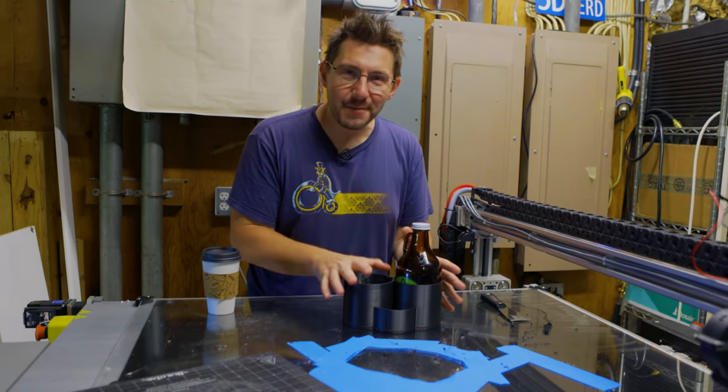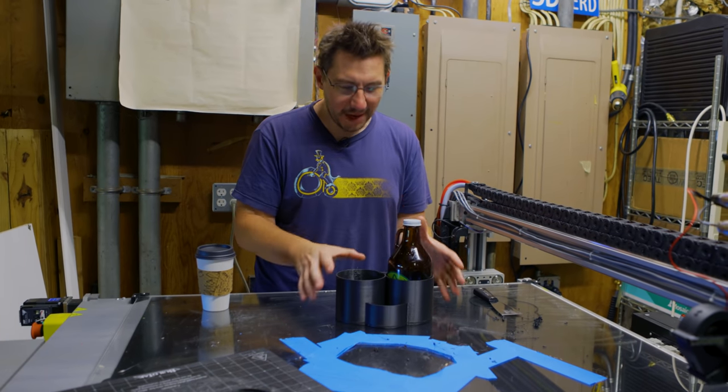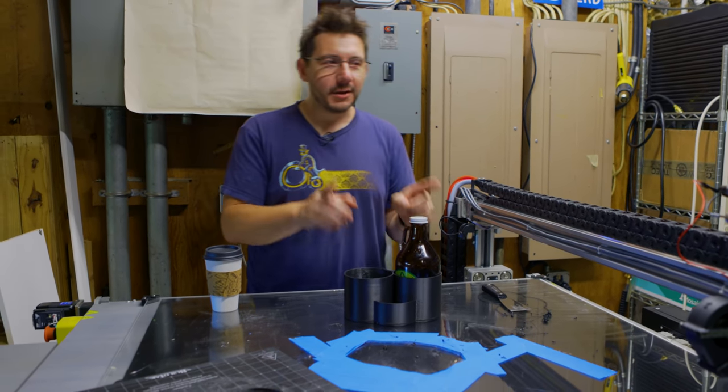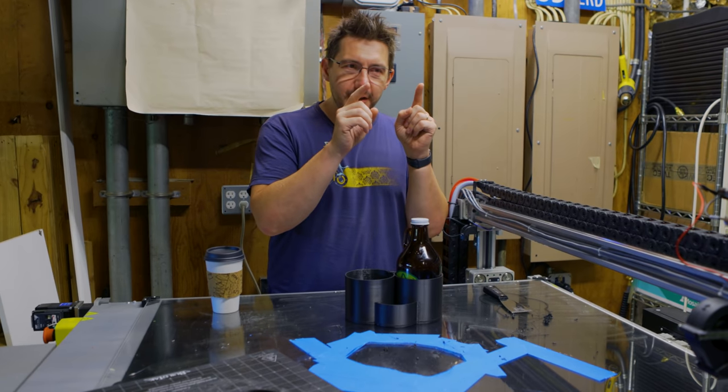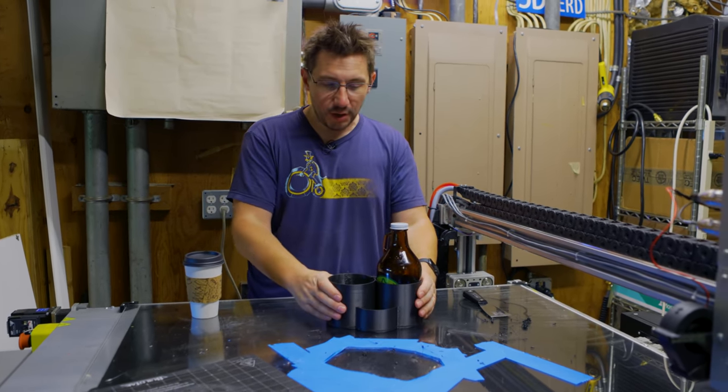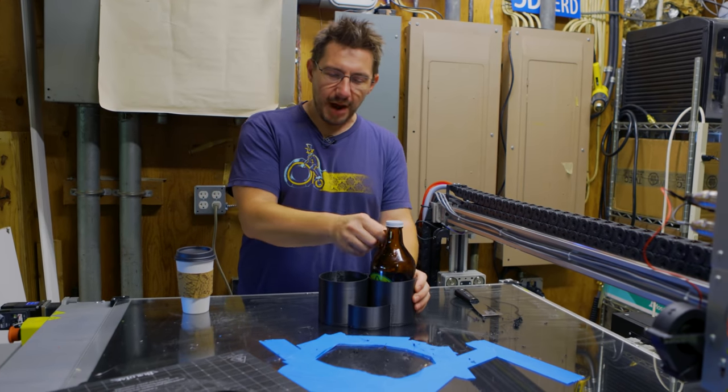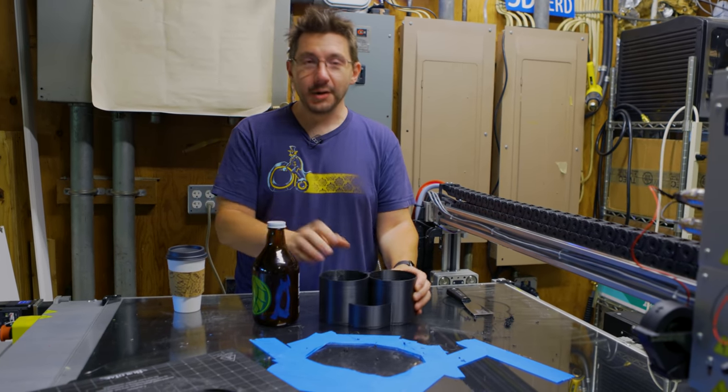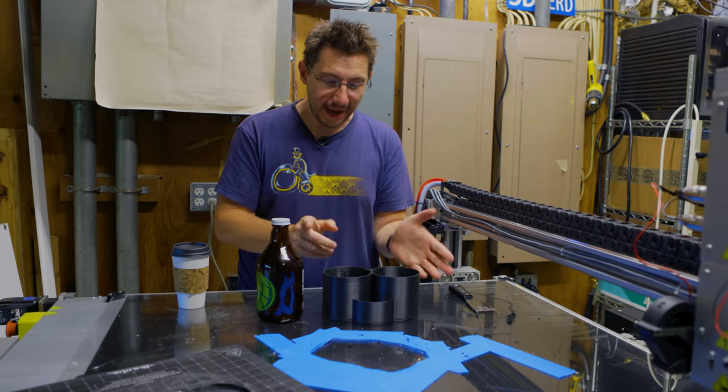This was a functional print. I took 30 minutes in Fusion 360 just to kind of get my design down. And I designed it knowing the extrusion settings for this machine. And it came out really good. It's nice and strong. PETG is going to last forever. And I'm going to use this when I go get a fill-up at the pub next.